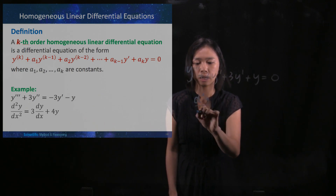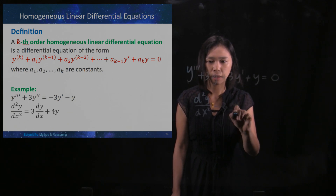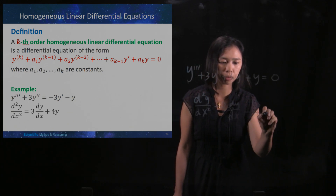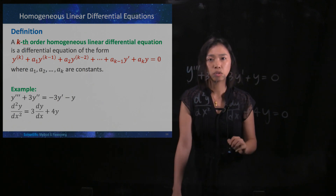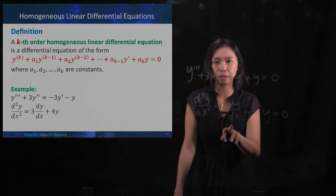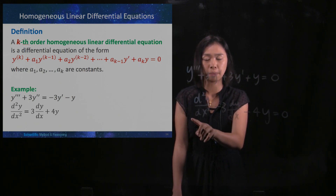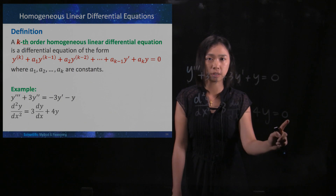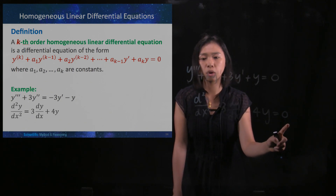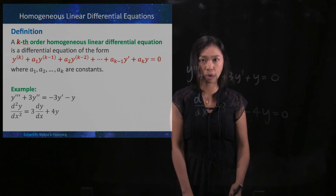For the second example: d²y/dx² minus three dy/dx minus four y, which equals zero. We have y, y differentiated one time, and y differentiated two times, all multiplied by constants one, negative three, and negative four. When they add up together they are zero, meaning there is no non-zero constant term. So this is a second-order homogeneous linear differential equation.